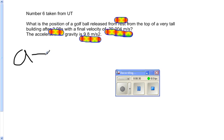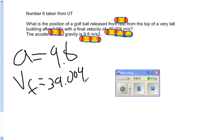Acceleration equals 9.8. Final velocity equals 39.004. Initial velocity is zero because it said it started from rest. But I need to find my distance because that's what it's asking for right here. I'm just going to put a question mark there for right now.